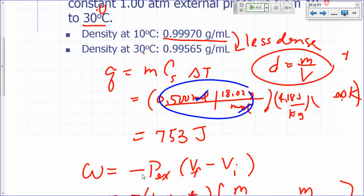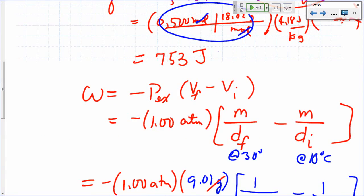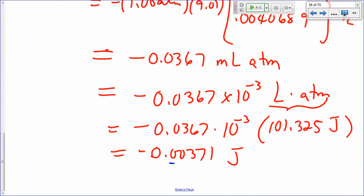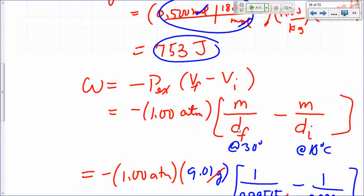So when something becomes less dense, its volume has increased. So the volume increases, water expands from 10 degrees Celsius to 30 degrees Celsius. So you have a negative work. Compare that work, though, to the amount of heat. Heat flow, in this case, is 753 joules. How much energy did it lose because of expansion? 0.0037 joules. Compare that to 750 joules. So for practical purposes, you can just ignore that, right? Just in terms of the total amount of energy that's involved when water is heated from 10 degrees to 30 degrees.